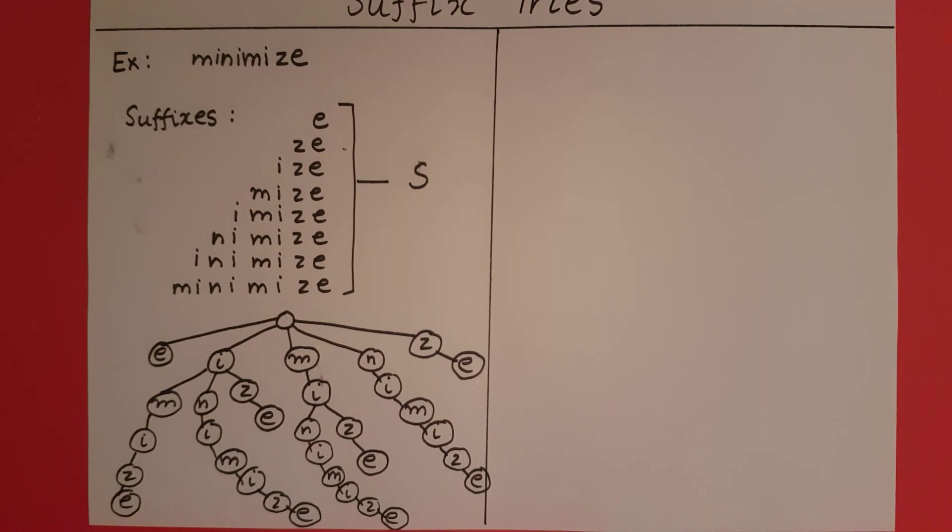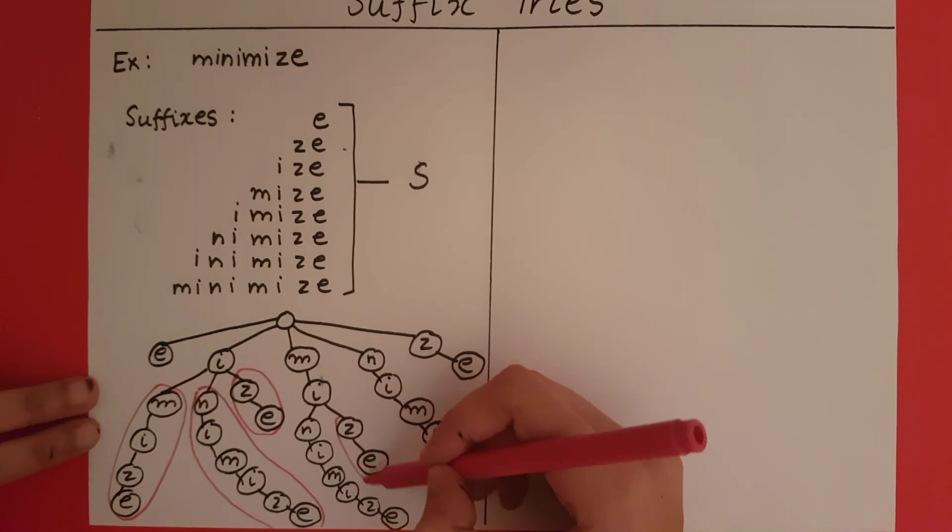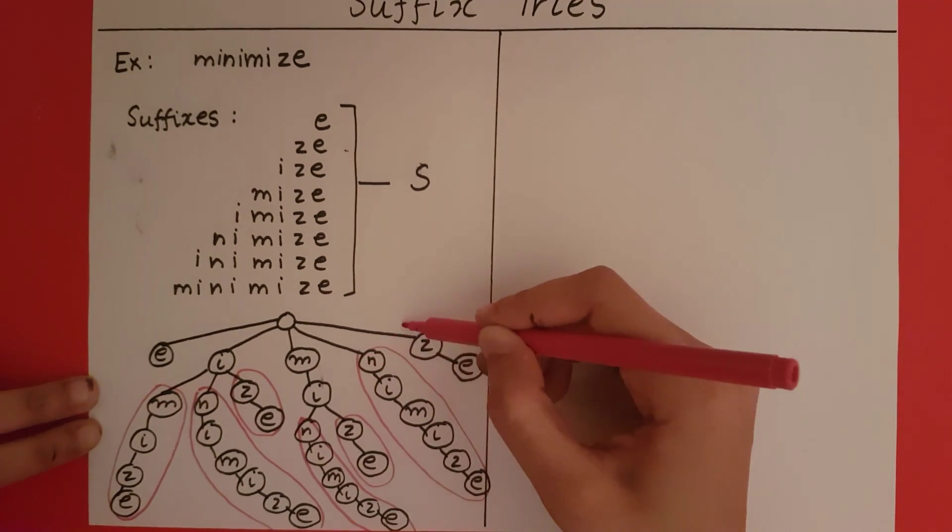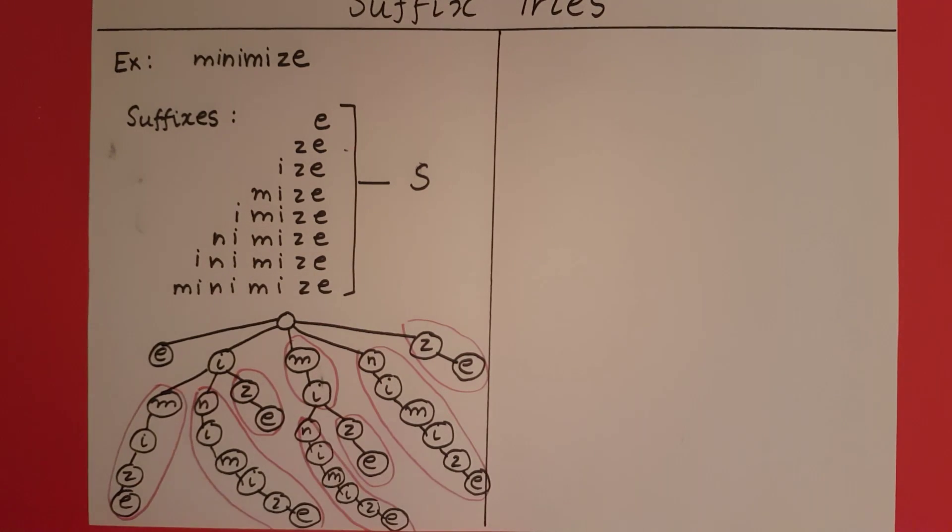Now the next step is to draw the compressed trie. Let's see in this trie where there is scope for compression. We can compress this, we can compress ze here as well. Now with this we can construct the compressed trie.